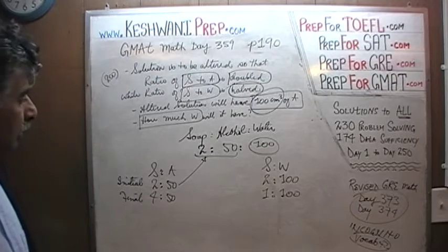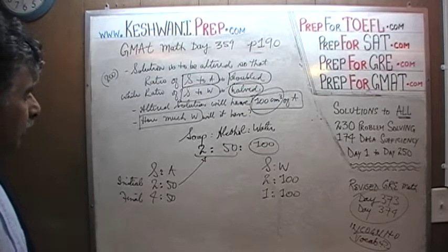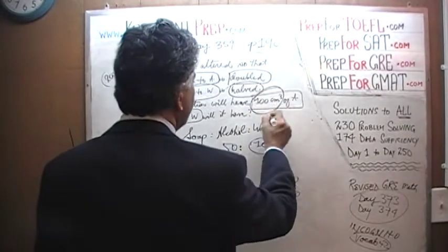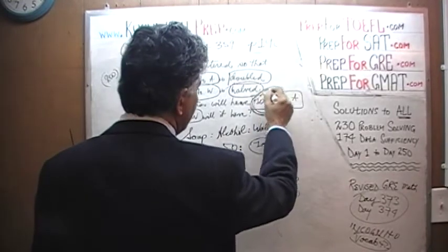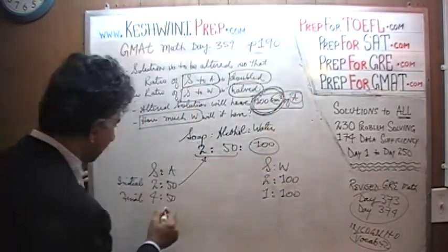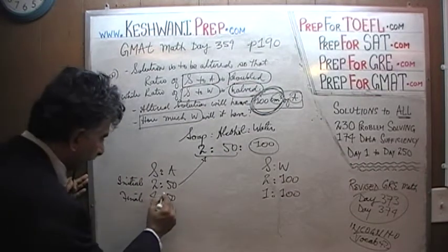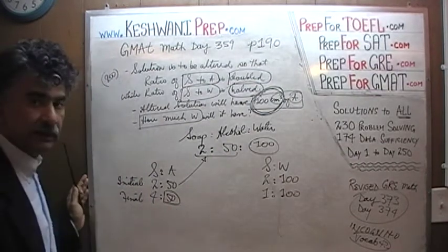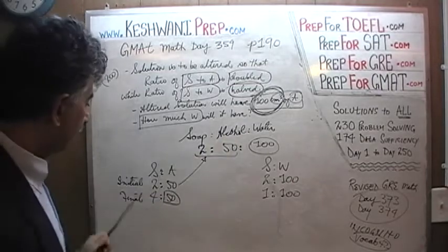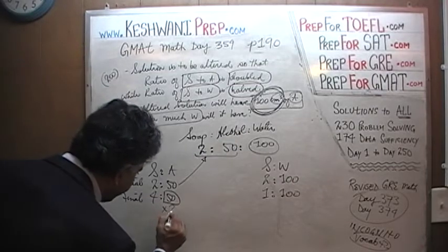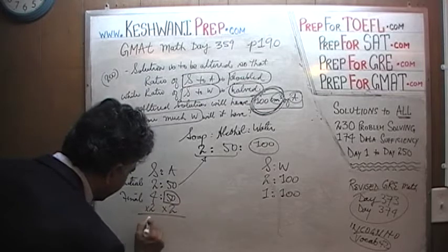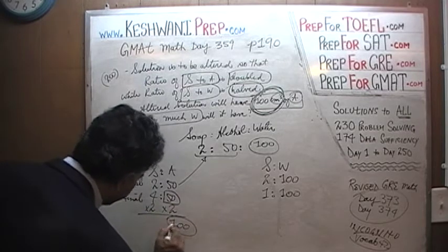We need 100 cubic centimeters of alcohol. The way it stands right now, we have only 50 cubic centimeters of alcohol. We need to have 100. So let's meet that condition — multiply this by 2. If we multiply by 2, we have to multiply that by 2 as well. Now we have 8 of soap. Do you understand how we're doing this step by step until everything fits together?